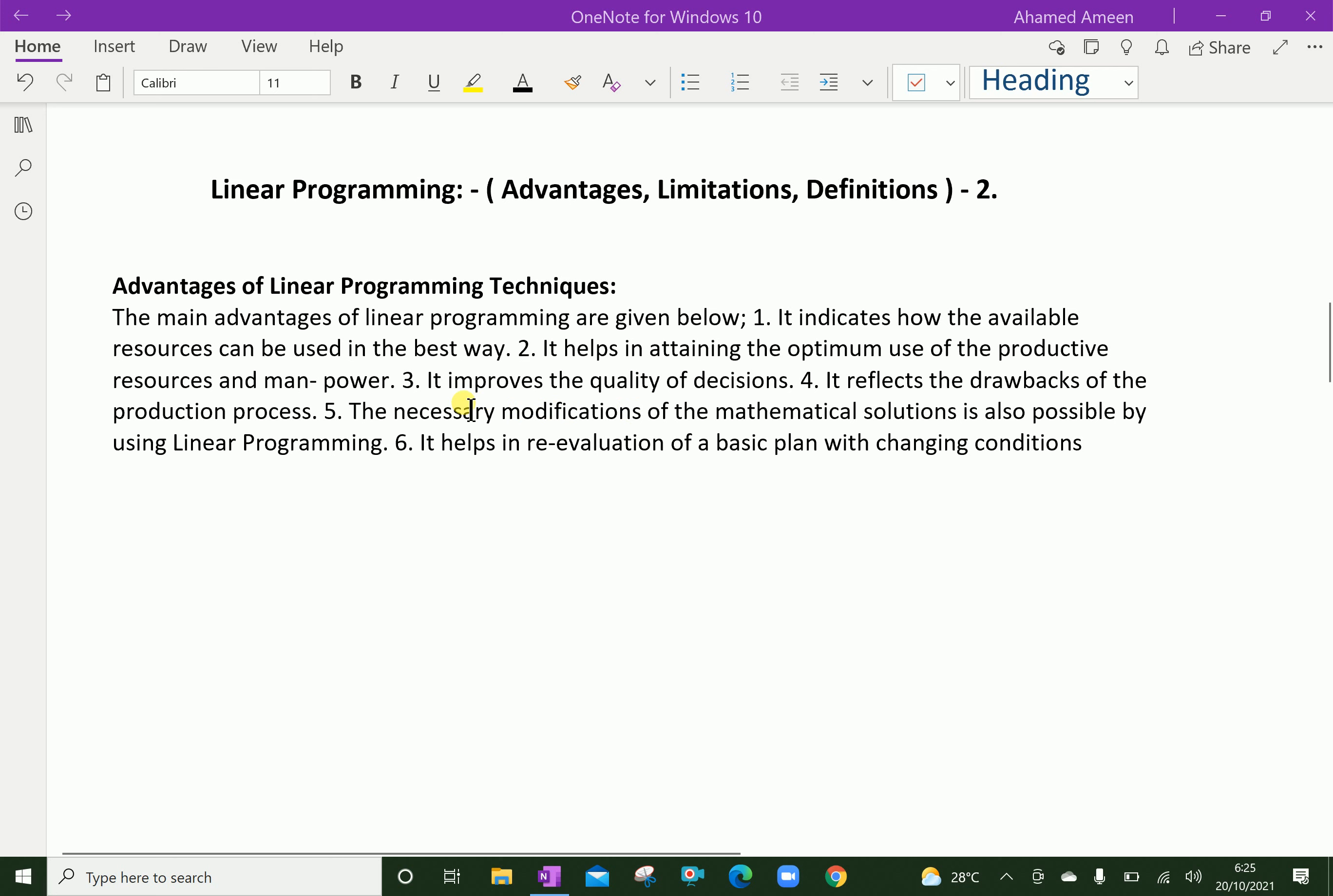The decision makers can easily get some improvements in quality and decision making. It reflects the drawbacks of the production process. That means whatever drawbacks will come in future can also be predicted by using the techniques of linear programming.